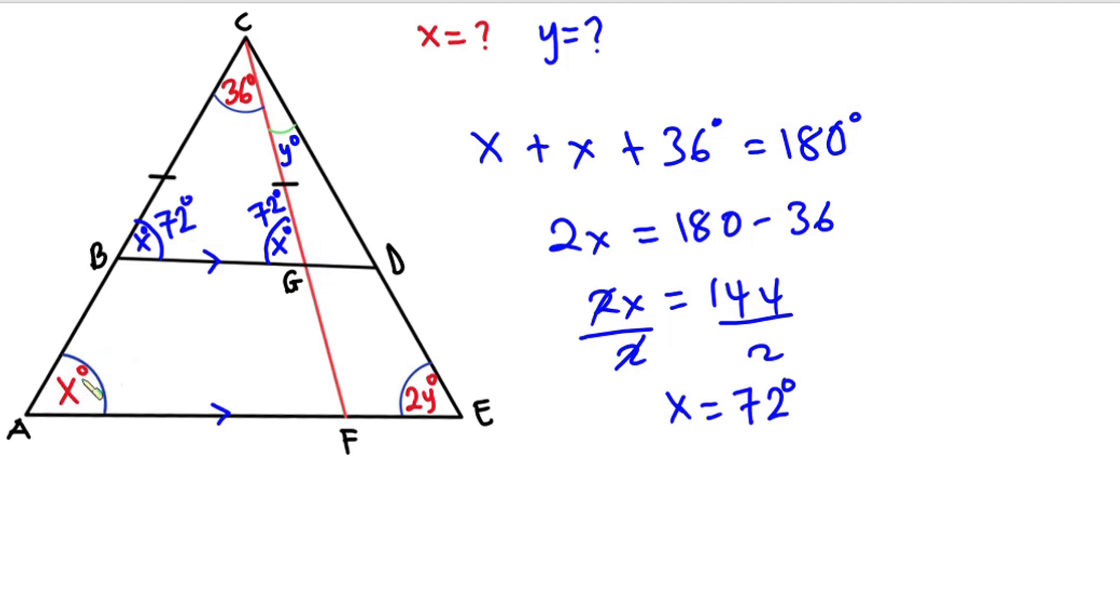So this angle over here is 72 degrees. What it means is that the angle over here is also 72 degrees. So we have been able to find x. Now we are left with y, so how can we find y from this triangle?